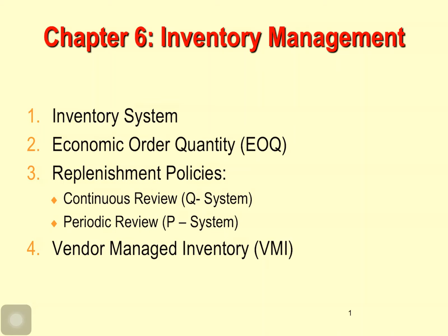To achieve those learning expectations, we will go through four main parts, separated into two lessons. First, we will look at the inventory system. Second, we will learn a methodology to calculate the Economic Order Quantity — that is EOQ. The next part is the replenishment policies, which include the Q system and P system. And finally, vendor-managed inventory, VMI.